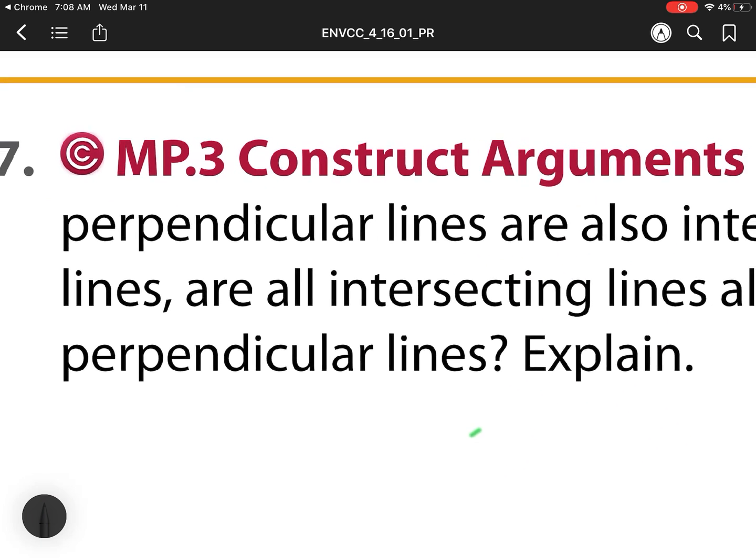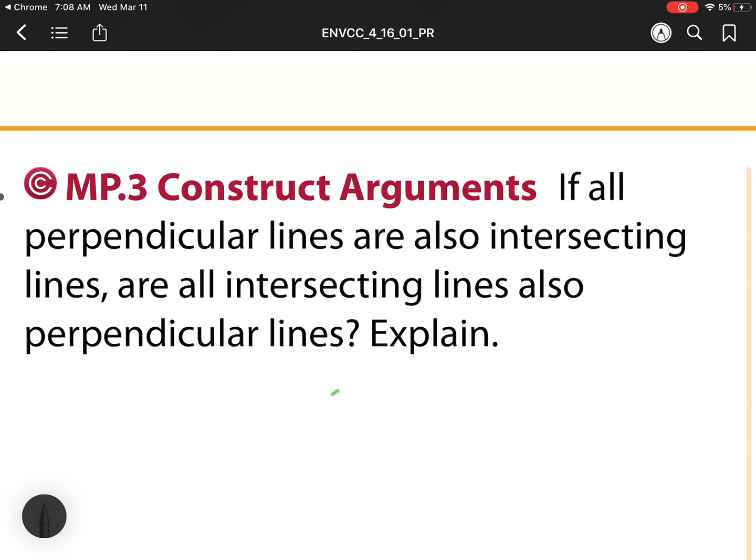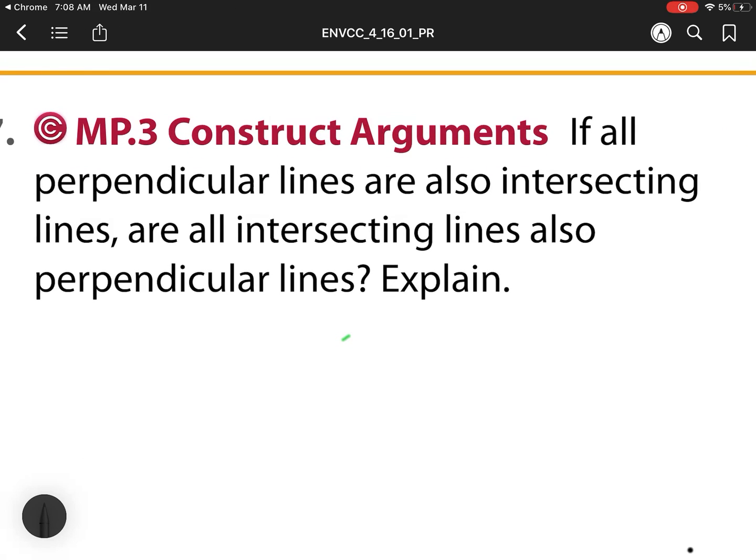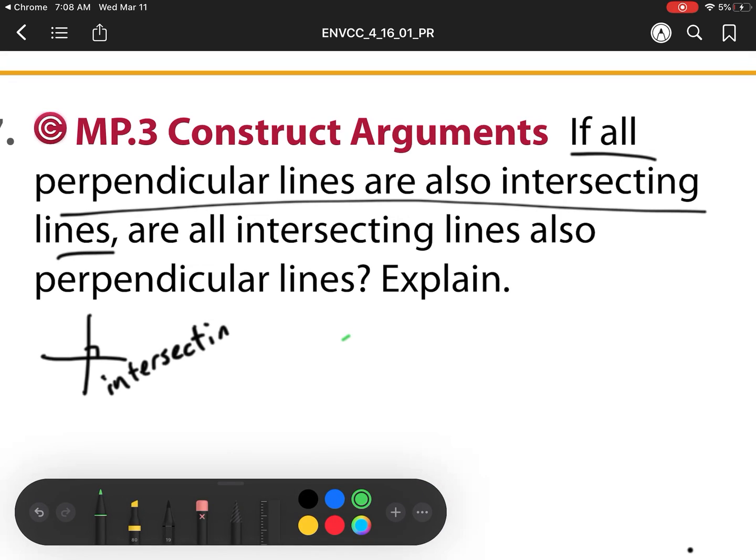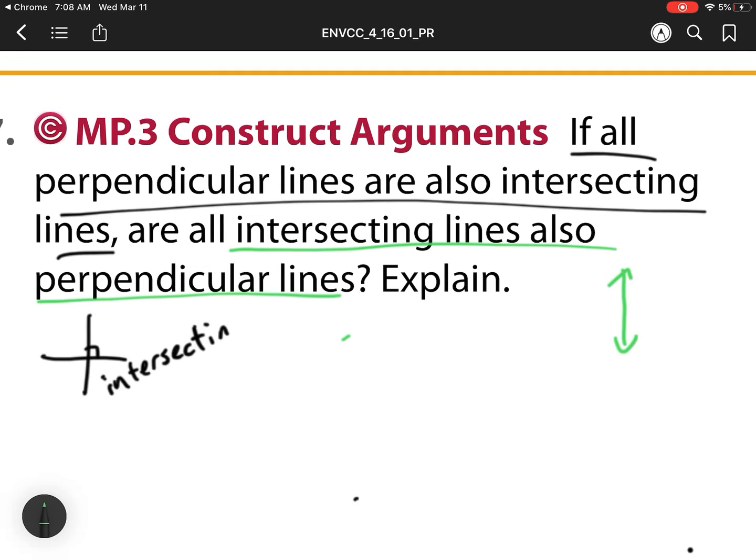Now, let's look at number 17. If all perpendicular lines are also intersecting, are all intersecting lines also perpendicular? Explain. So it's saying every single perpendicular line we have is going to be intersecting. So that's this first part. The second part is asking, are all intersecting lines also perpendicular? So let's draw an intersecting line. There's an intersecting line and there's an intersecting line. Is that perpendicular? Well, the answer is no because that is not a right degree angle. So our answer is no.